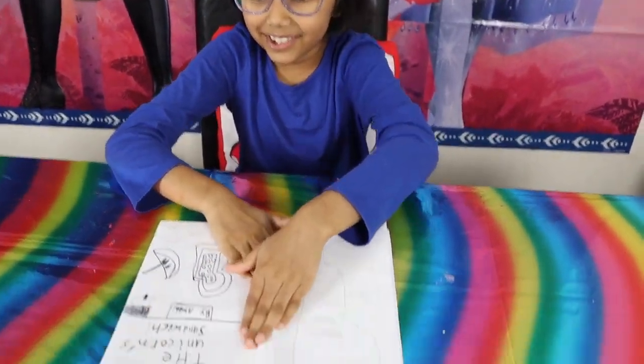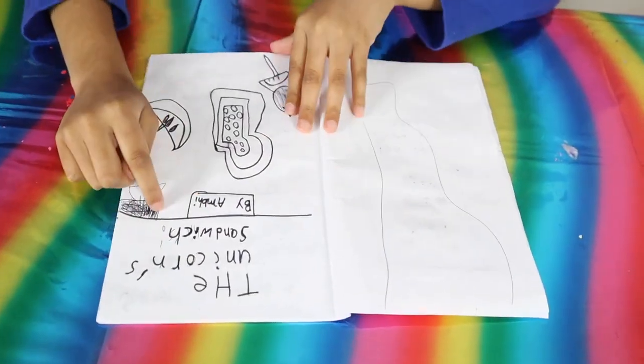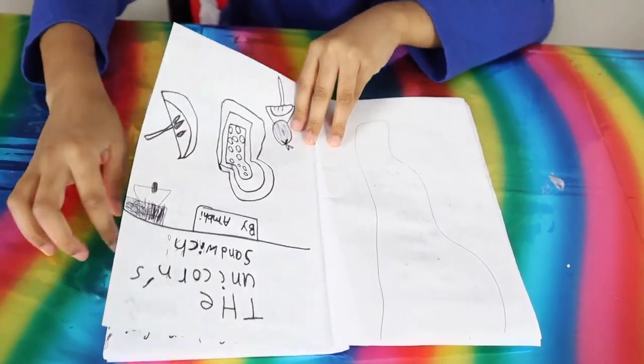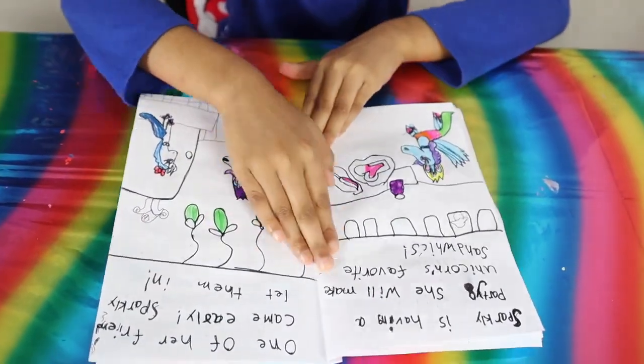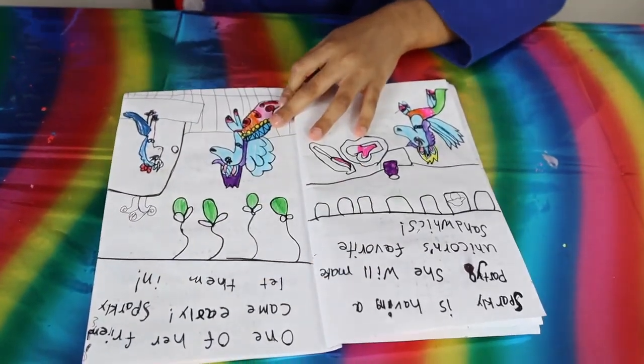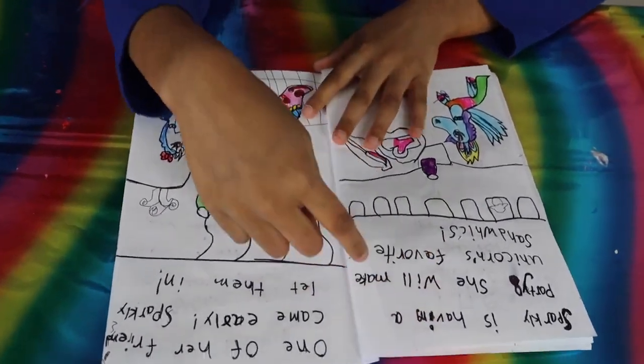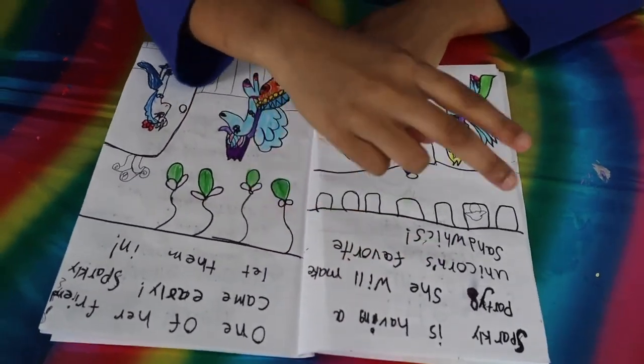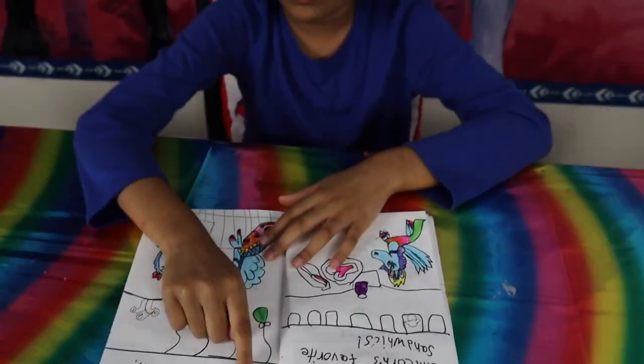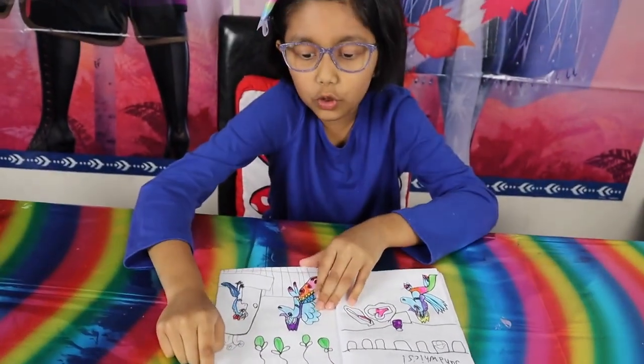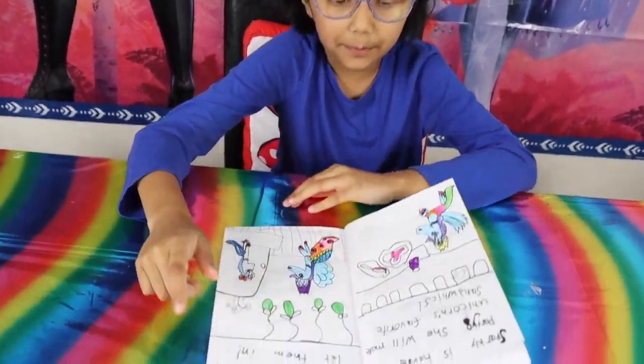The unicorn's sandwiches. It's by me. Sparkly is having a party. She will make unicorn's favorite sandwiches. One of her friends came early. Sparkly let them in.